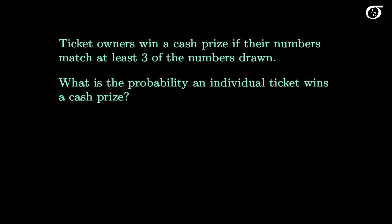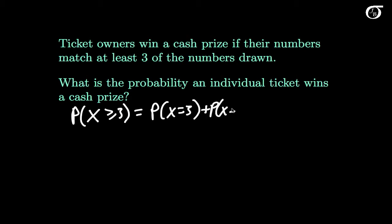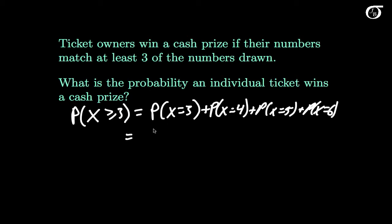Ticket owners win a cash prize if their numbers match at least 3 of the numbers drawn. What is the probability an individual ticket wins a cash prize? We need the probability that X is greater than or equal to 3, which equals the probability X equals 3, plus the probability X equals 4, plus the probability X equals 5, plus the probability X equals 6. We use our formula for each of these terms and add them up.